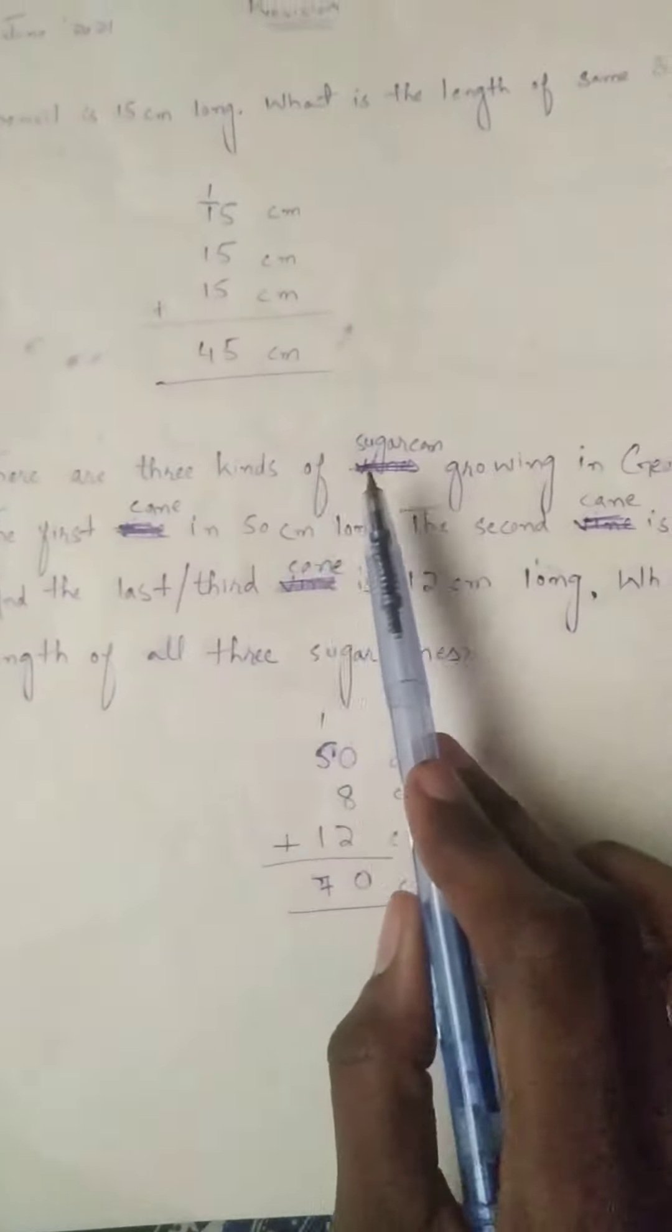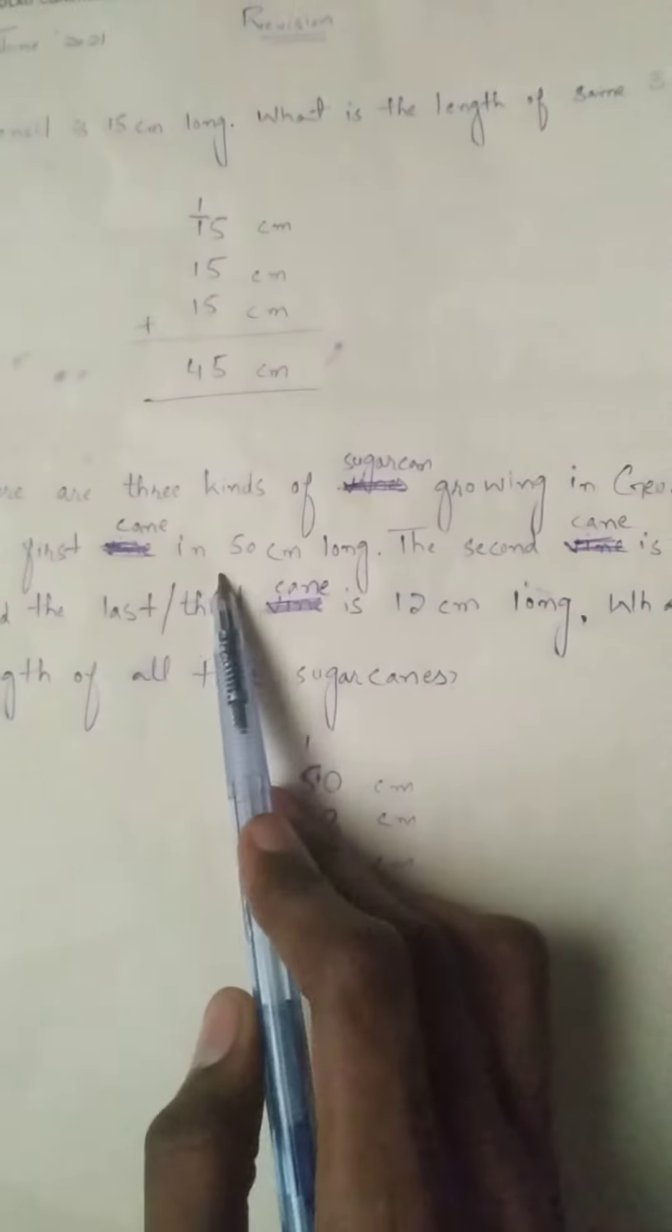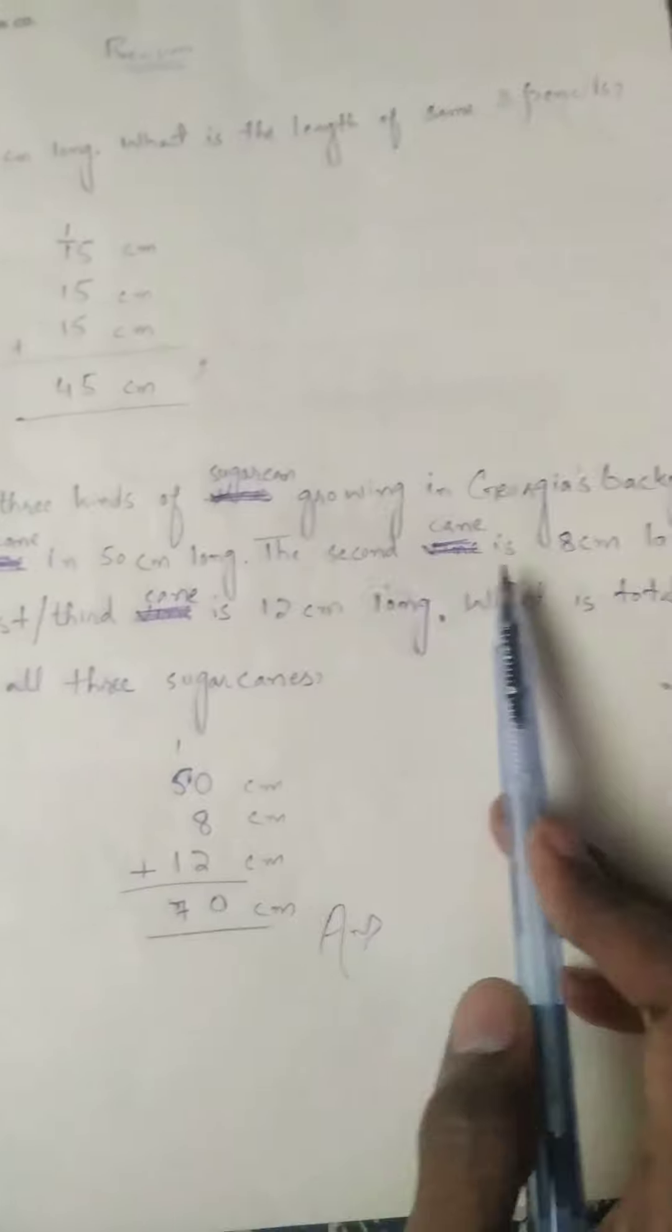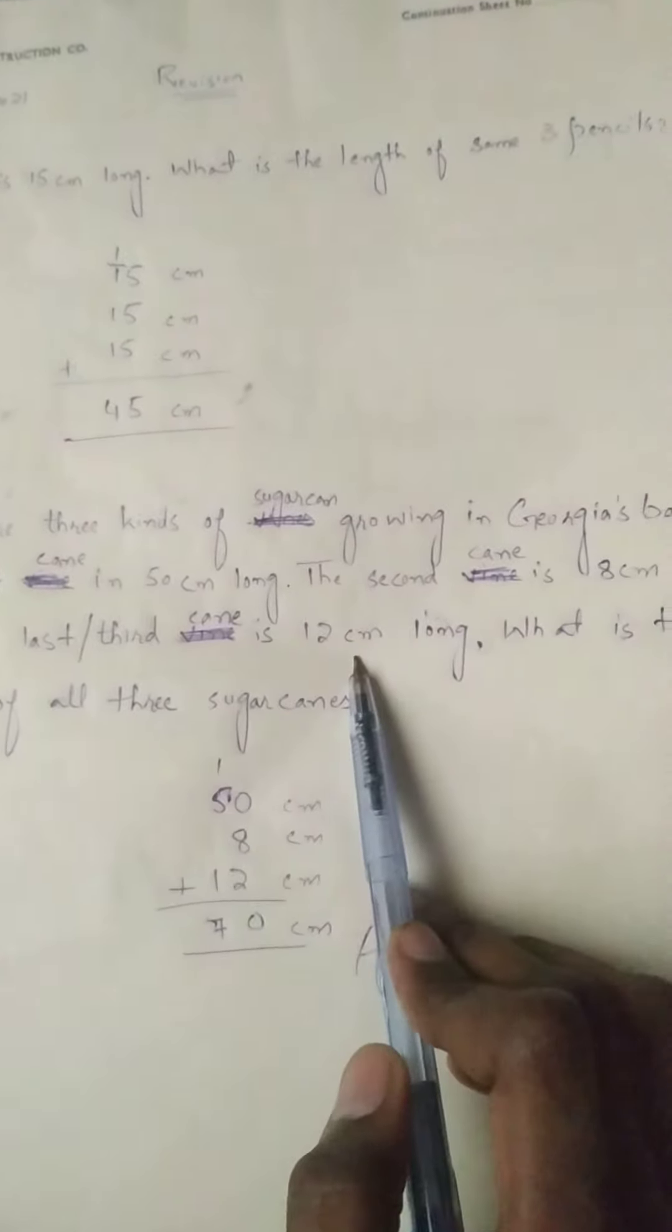Similarly, question number two. There are three kinds of sugarcane growing in Georgia's backyard. The first cane is 50 centimeter long, the second cane is 8 centimeter long, and the last or third cane is 12 centimeter long.